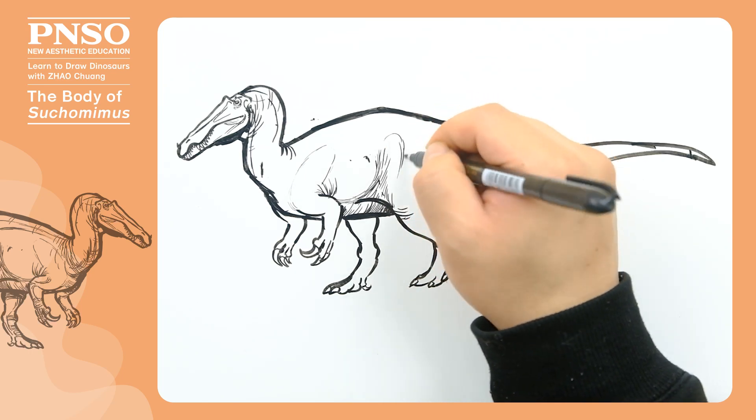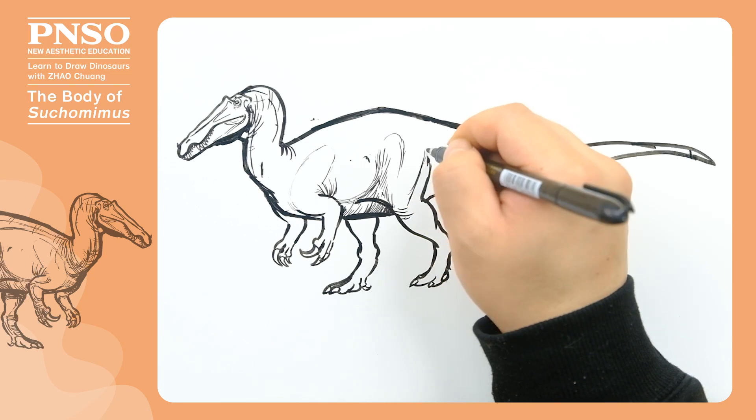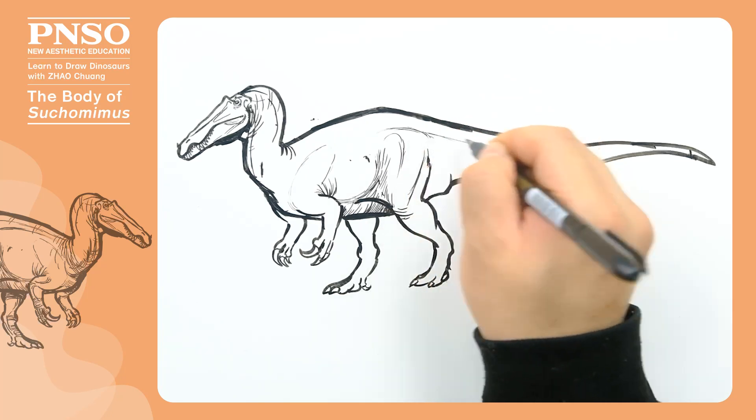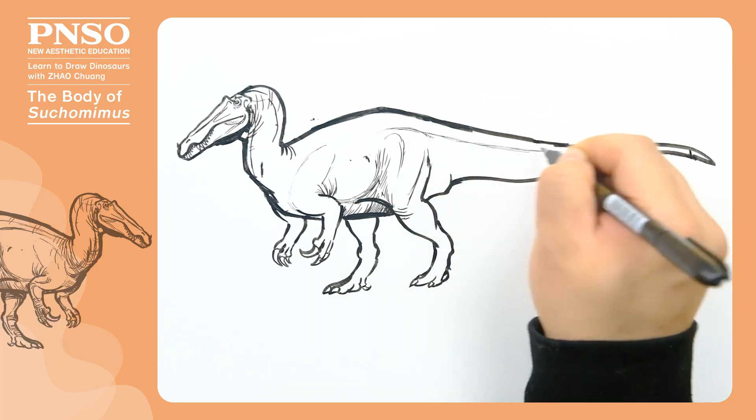Next, we show the muscles of its legs. Between its trunk and the neural spines on its back, we can draw a boundary line.